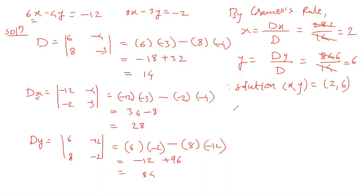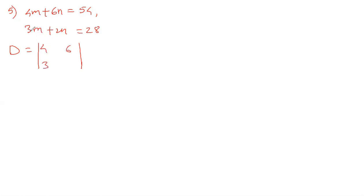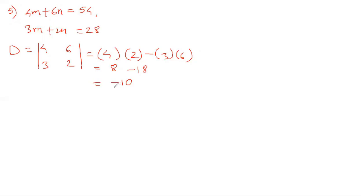In the same way, we find the solution of the next question. The fifth problem is: 4m plus 6n equals 54, and 3m plus 2n equals 28. We find the value of D: the coefficients of m and n are 4, 6 and 3, 2. Cross multiplying: 4 times 2 is 8, minus 3 times 6 is 18. So 8 minus 18 equals minus 10.